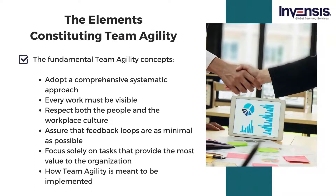Here are fundamental team agility concepts: adopt a comprehensive systematic approach; every work must be visible; respect both the people and the workplace culture; assure that feedback loops are as minimal as possible; and focus solely on tasks that provide the most value to the organization. The objective of implementing a framework is sufficiency — just enough to get the job done but not so much as to impede comprehension.